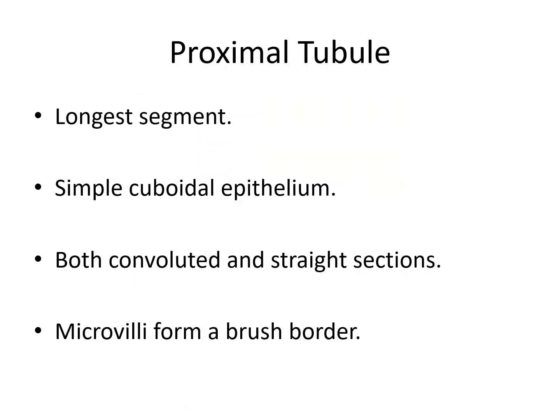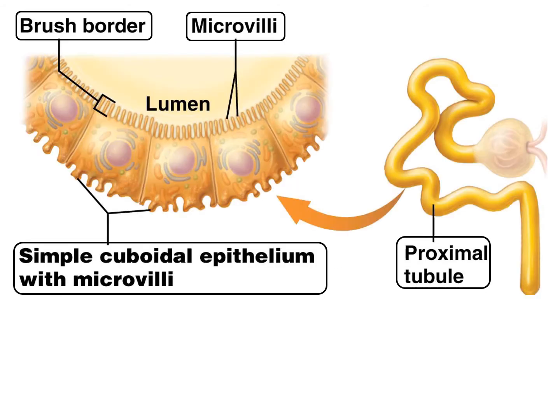The proximal tubule is the longest segment, formed of simple cuboidal epithelium. It has both convoluted and straight areas and contains microvilli forming a brush border. With a brush border, you can expect that absorption is going to occur here. It has a coiled part and a straight part.